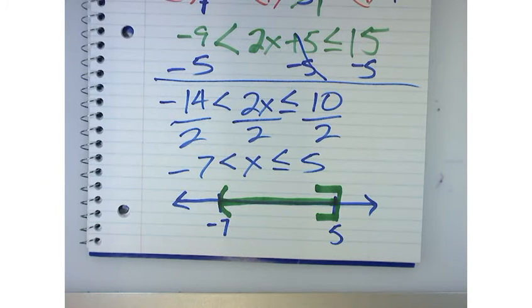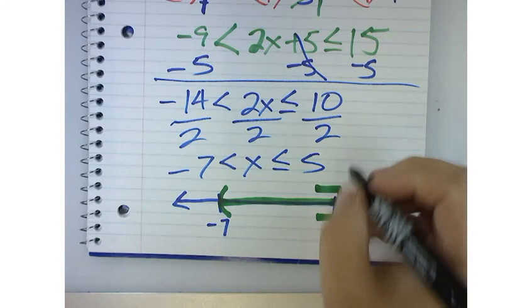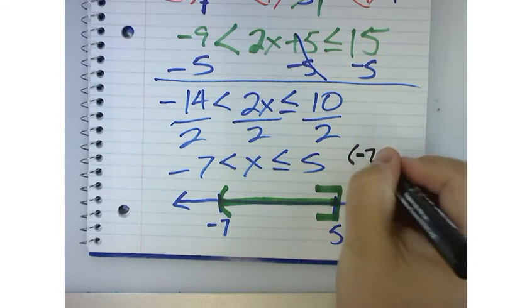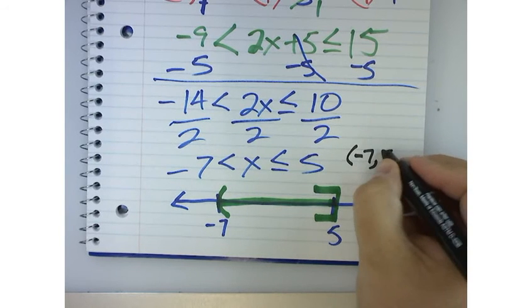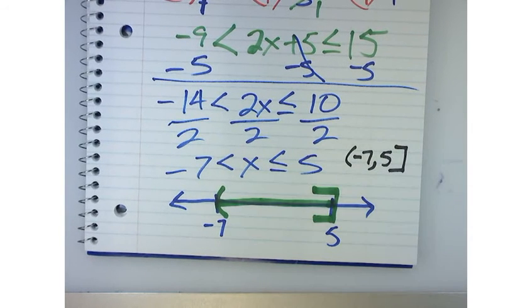Now, how do I write that out in set notation, though? Negative 7. Parenthesis, negative 7, comma, 5. Wow, you guys are really smart. You must have an awesome principal.